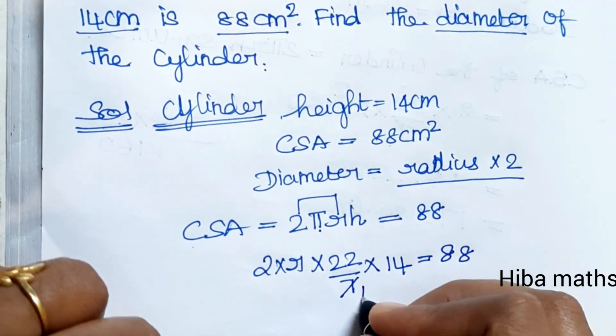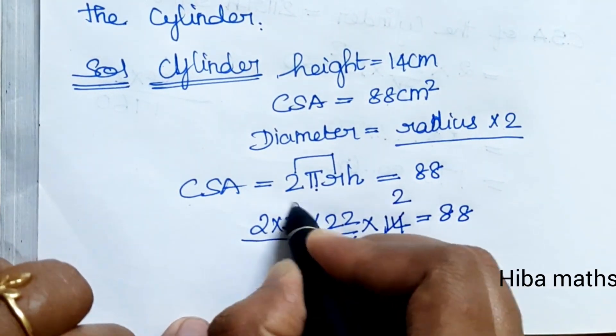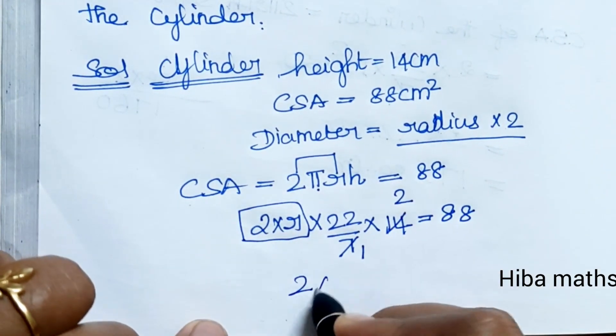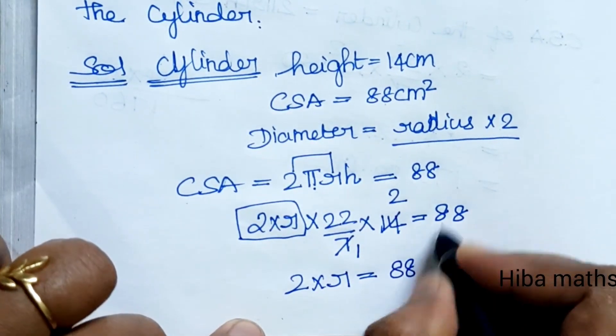Now, 7 and 14 cancel, giving us 2. We write 2R, which is 2 into R, equals 88 divided by (22 × 2).